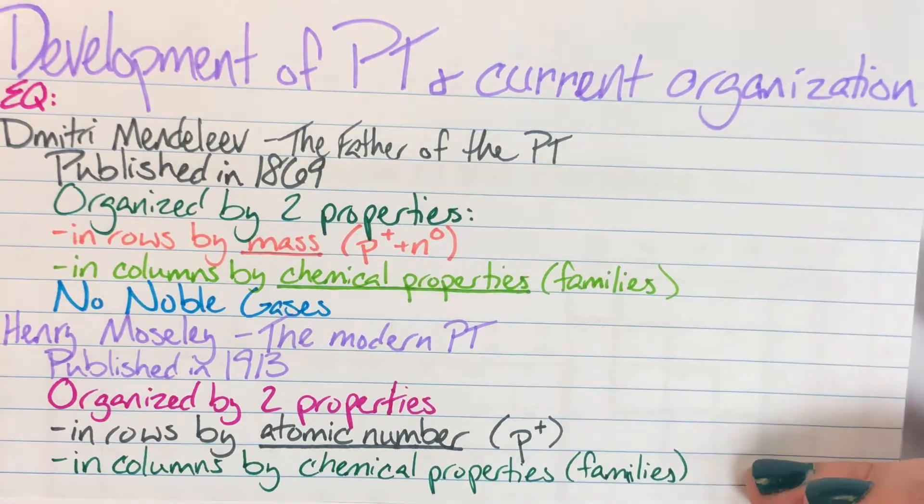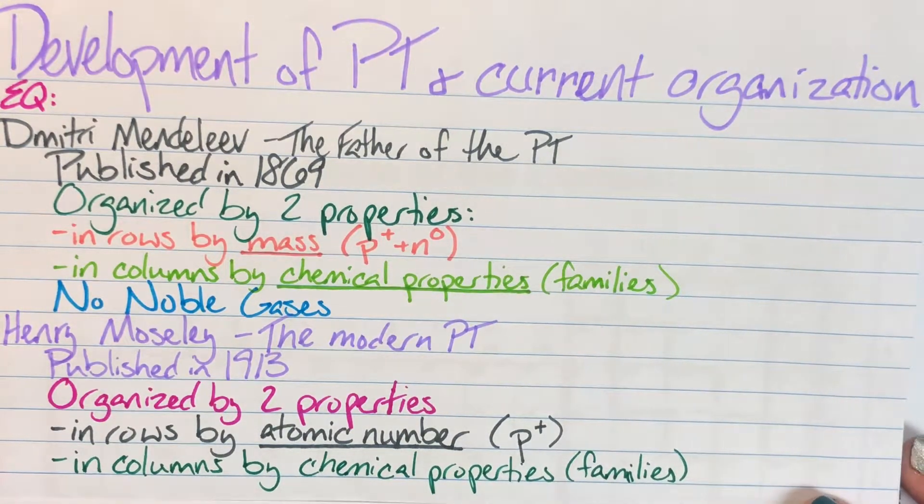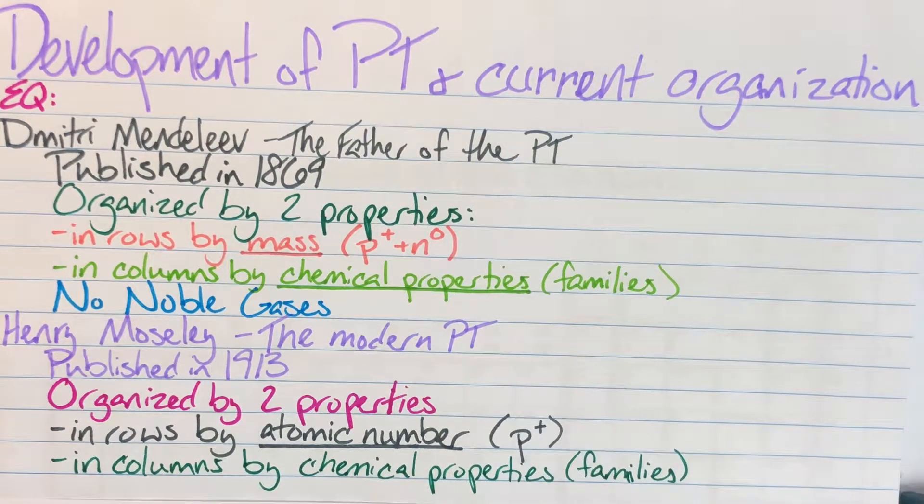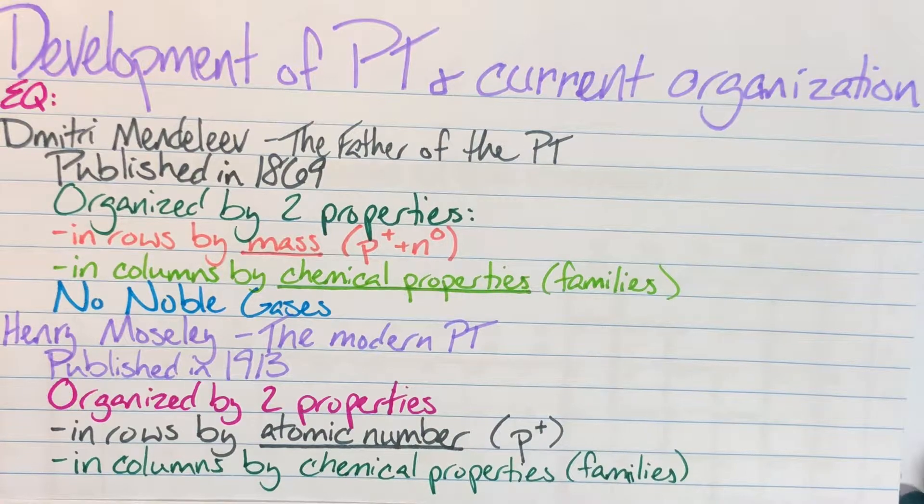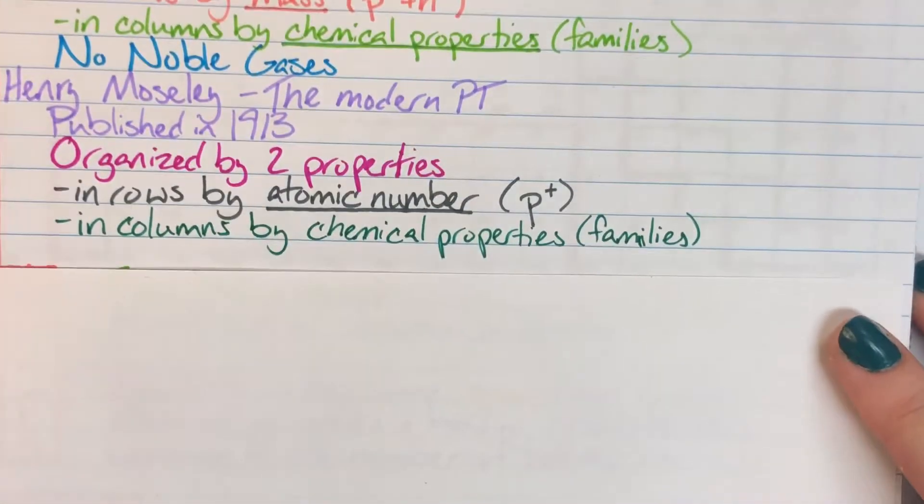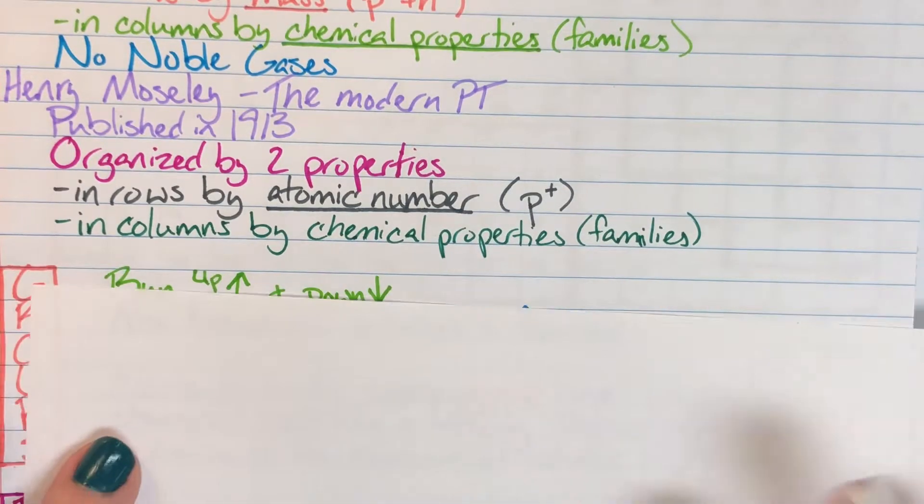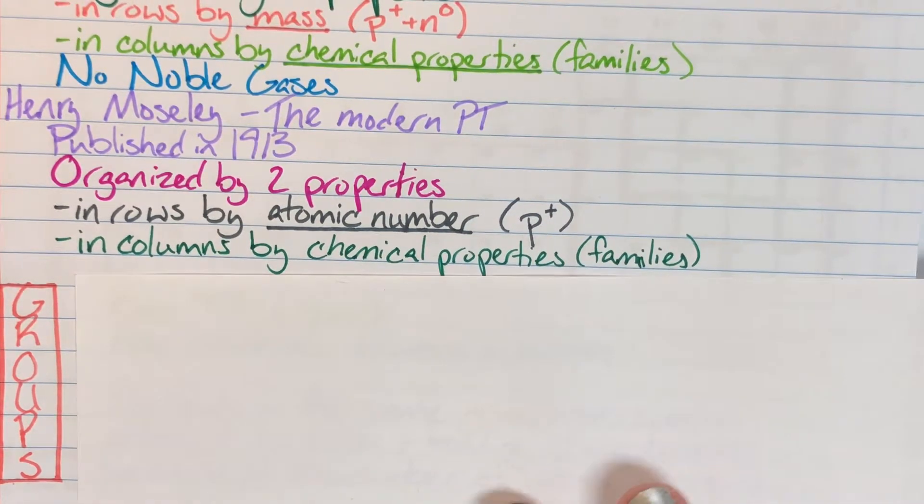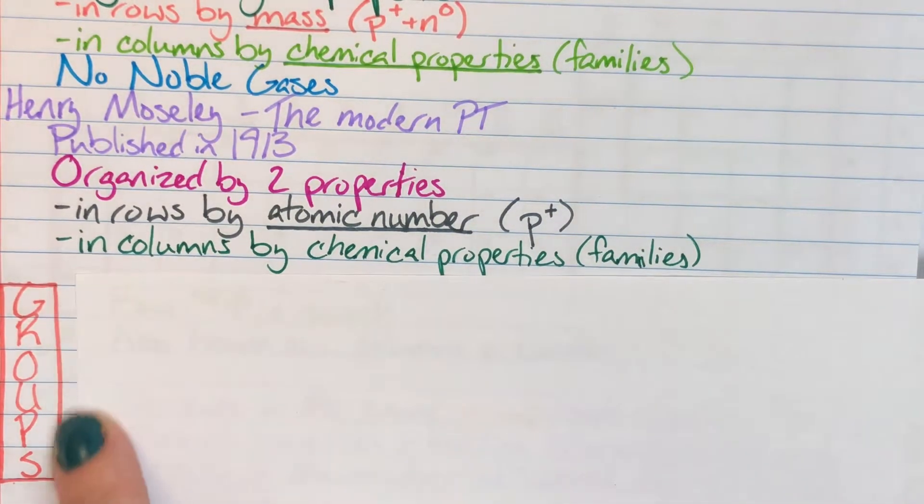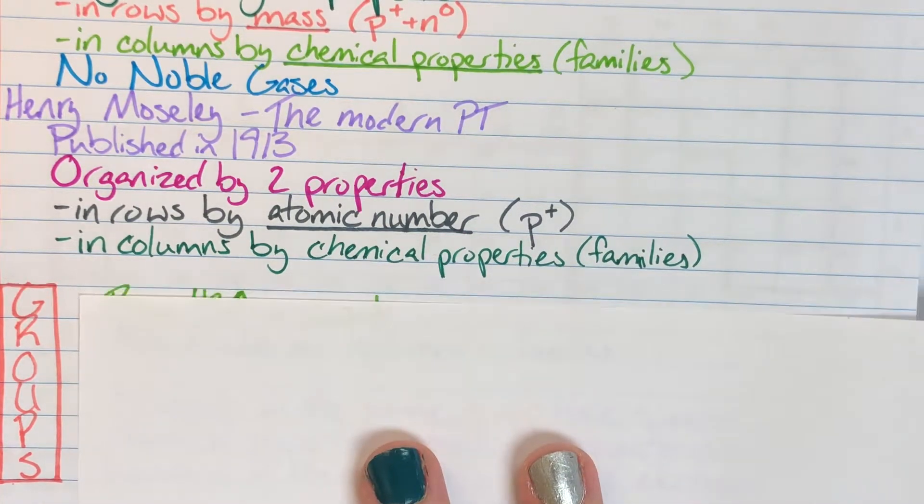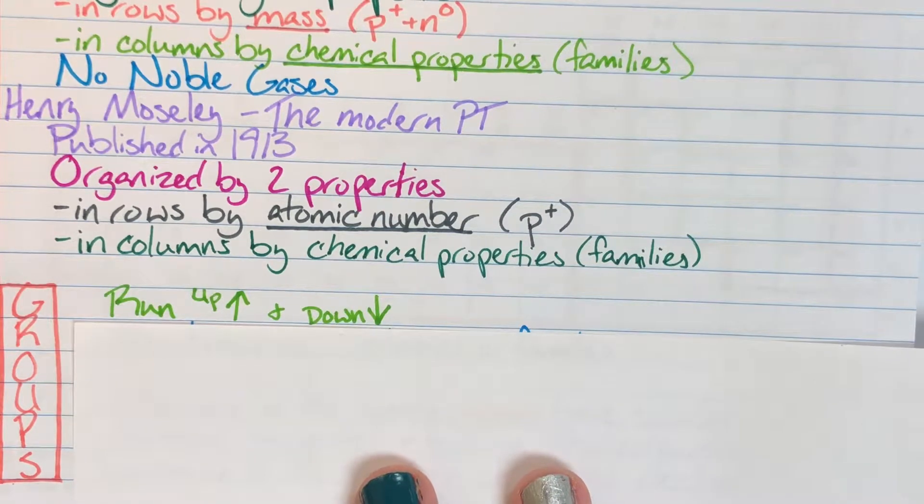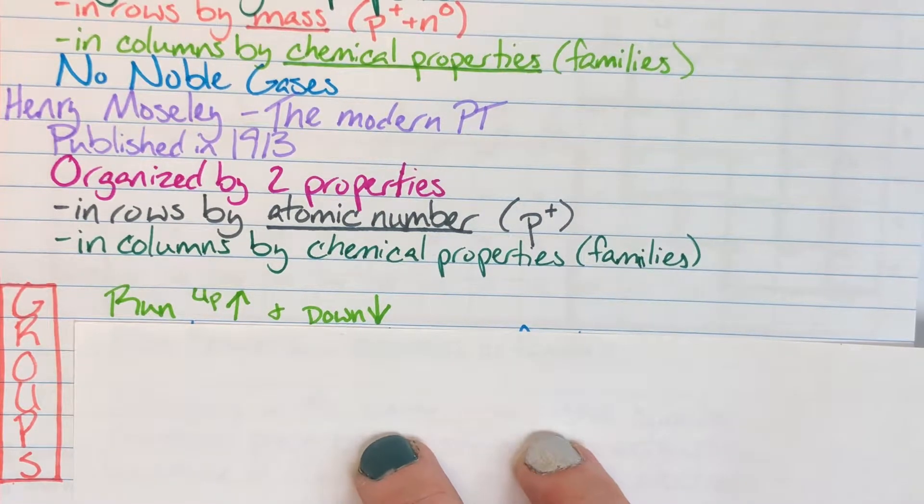So that's how they came to our Periodic Table and how they helped us, and we're going to talk about specifically what our Periodic Table looks like now. And that is going to be first with groups. As you can see I've written it up and down on the vertical, and that is because groups are my vertical things. They run up and down on the Periodic Table. They are my columns.